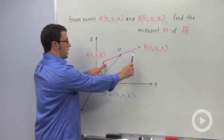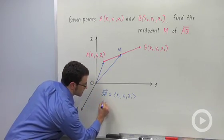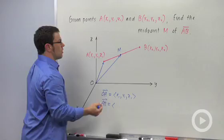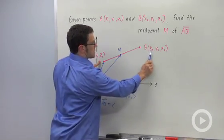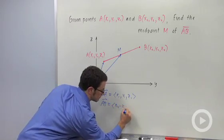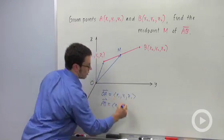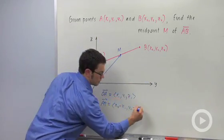And I'm also going to need vector AB in order to find M. And what are the components of AB? Well, since vector AB goes from point A to point B, the components are x₂ minus x₁, y₂ minus y₁, and z₂ minus z₁.